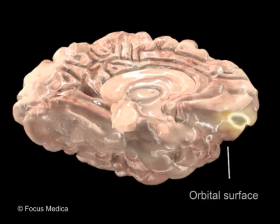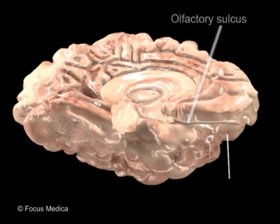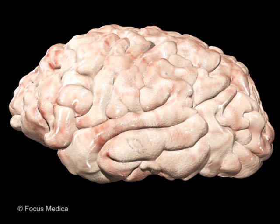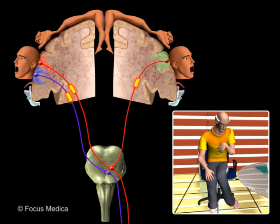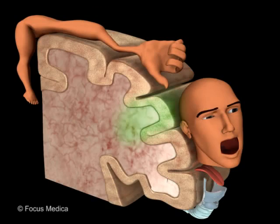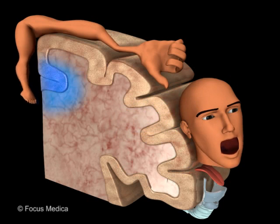The orbital surface has a prominent anteroposteriorly running olfactory sulcus, which lodges the olfactory bulb and tract. Focal cortical damage in the primary motor cortex causes contralateral paralysis of the muscles of the upper motor neuron type — spastic paralysis.